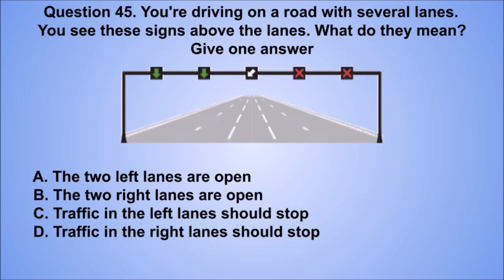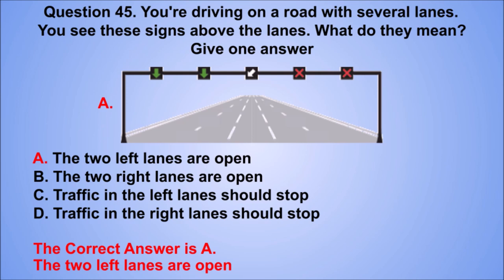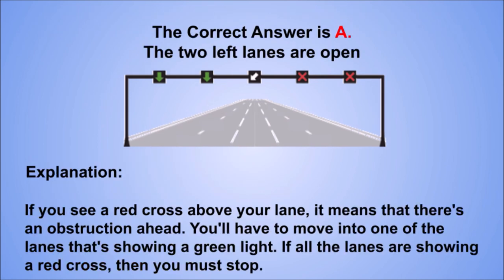Question 45. You're driving on a road with several lanes. You see these signs above the lanes. What do they mean? The correct answer is A, the two left-hand lanes are open. Traffic in the left-hand lanes should stop. Traffic in the right-hand lanes should stop. The correct answer is A, the two left-hand lanes are open. If you see a red cross above your lane, it means that there's an obstruction ahead. You'll have to move into one of the lanes showing a green light. If all lanes are showing a red cross, then you must stop.